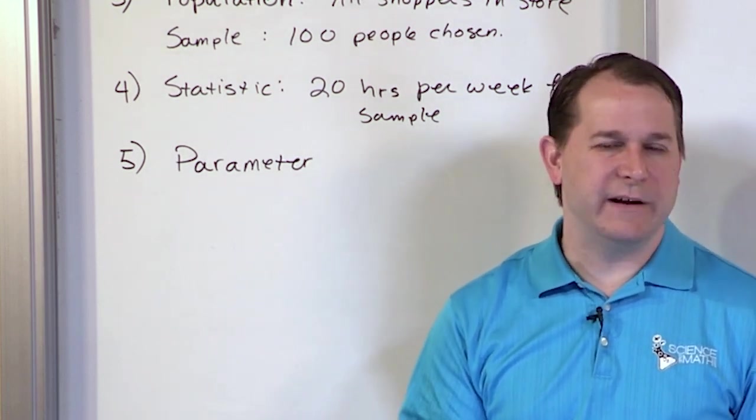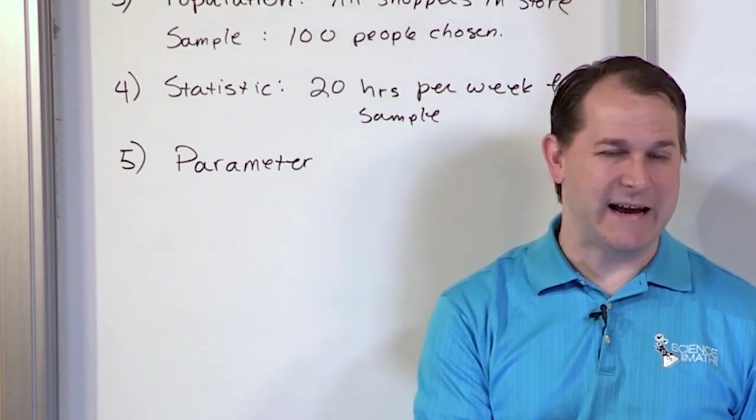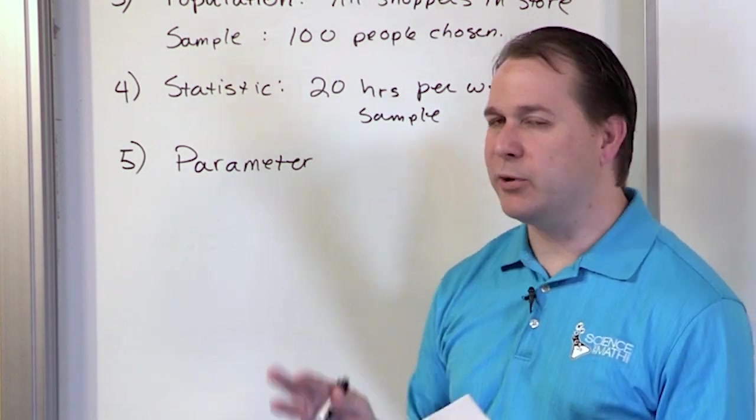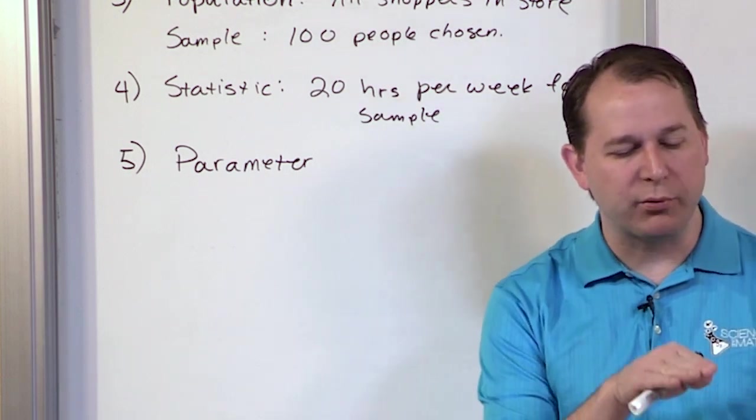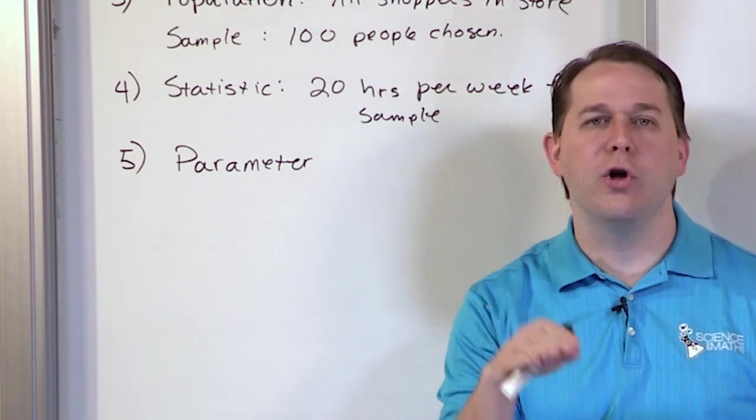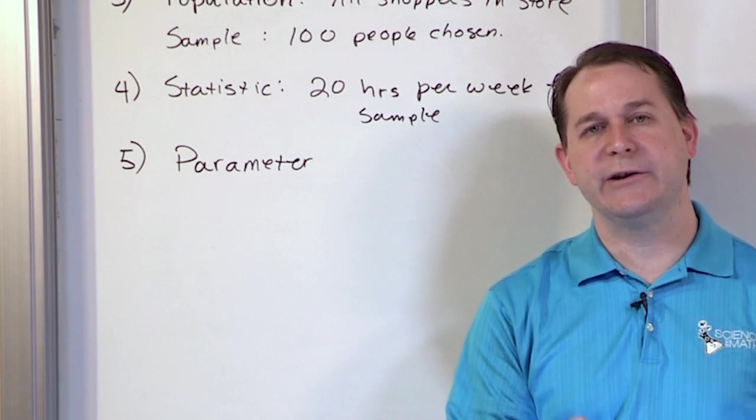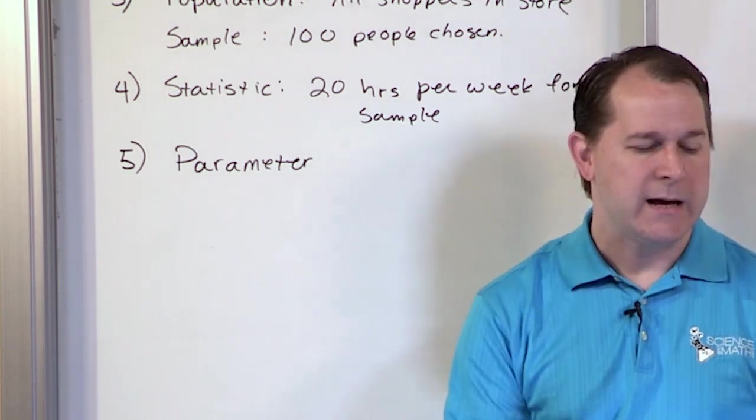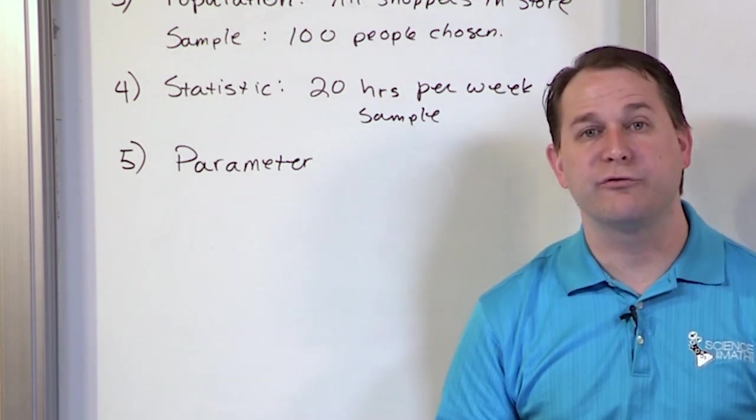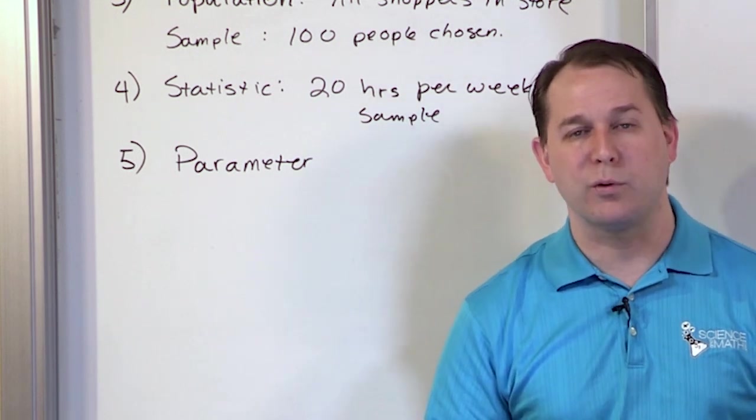So there's different ways you could convince yourself that this might be a sample rather than a parameter. But the most logical thing is the way the problem is worded. 87% of all patients in a hospital, the population would be all the patients in the hospital, 87% of them. So that's describing that population. So we call it a parameter.